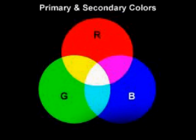Two mixed primary colors give a secondary color. If we mix red and green we get yellow. If we mix red and blue we get magenta. And if we mix green with blue we get cyan.